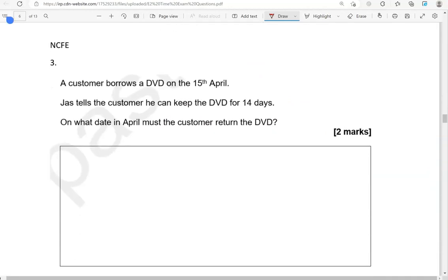The customer borrows a DVD on the 15th of April. Jazz tells the customer he can keep the DVD for 14 days. On what date in April must the customer return the DVD? So, he borrows it on the 15th of April and can keep it for 14 days. So, if we add 14 to 15, we get 29. So, the DVD must be returned on the 29th of April.